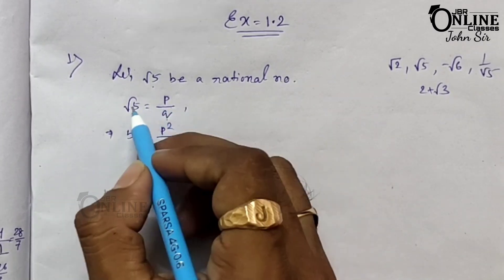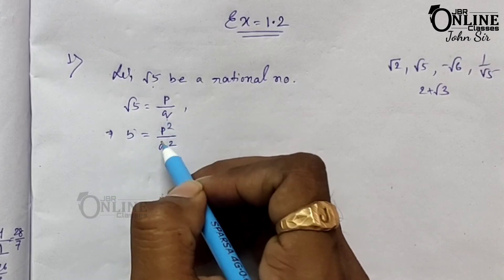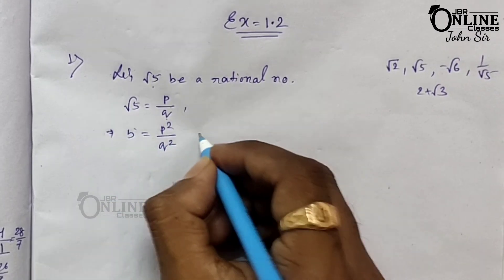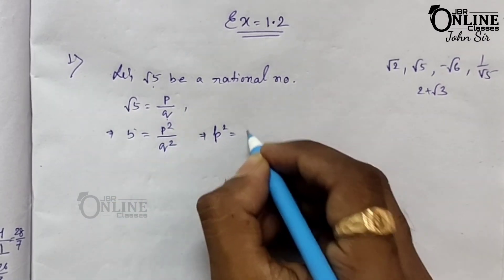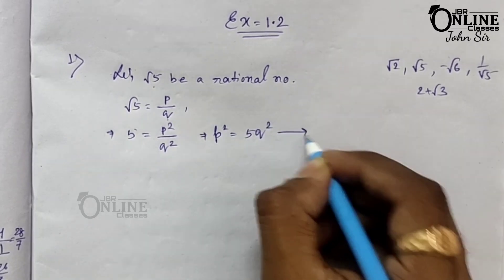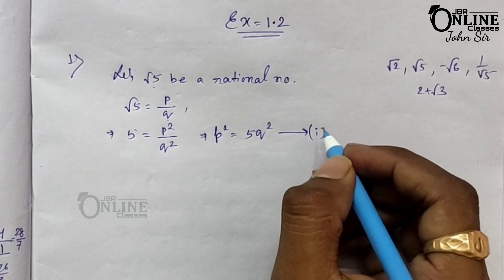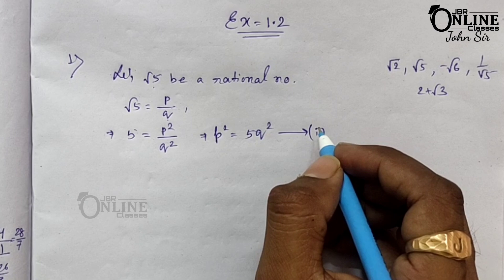Squaring both sides, you will get 5 = p²/q². From that, you can write p² = 5q². Put this as equation number 1.